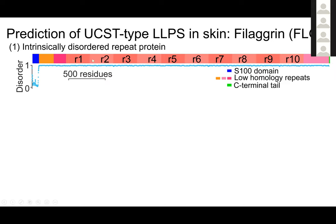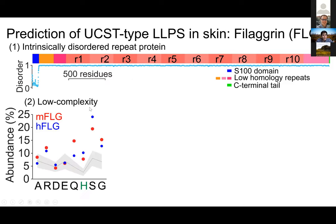Filaggrin is highly repetitive — R1, R2, R3 indicate repeats — with a very repetitive architecture similar to what we were making in our engineered constructs. Looking at the disorder plot, all domains of the protein except the blue domain are fully disordered. Intriguingly, it is also low complexity — the entire composition is dictated by only a handful of amino acids. We were particularly intrigued by the presence of histidines, which are a potential source of those cation-pi and pi-pi interactions important for UCST.